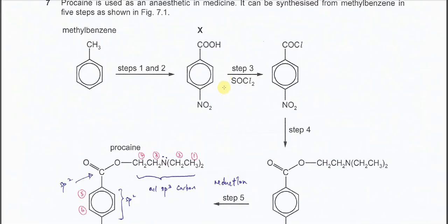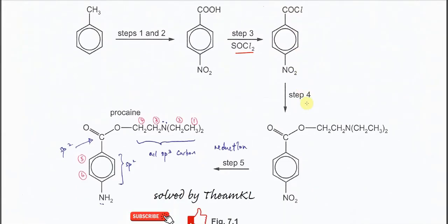Step 3 is a reaction of SOCl₂ with the COOH group. The carboxylic acid group will form COCl — the acyl chloride. So the OH is changed to Cl. After that, in step 4, the acyl chloride group is changed to an ester. This compound, after step 3, is going to react with an alcohol to form the ester.